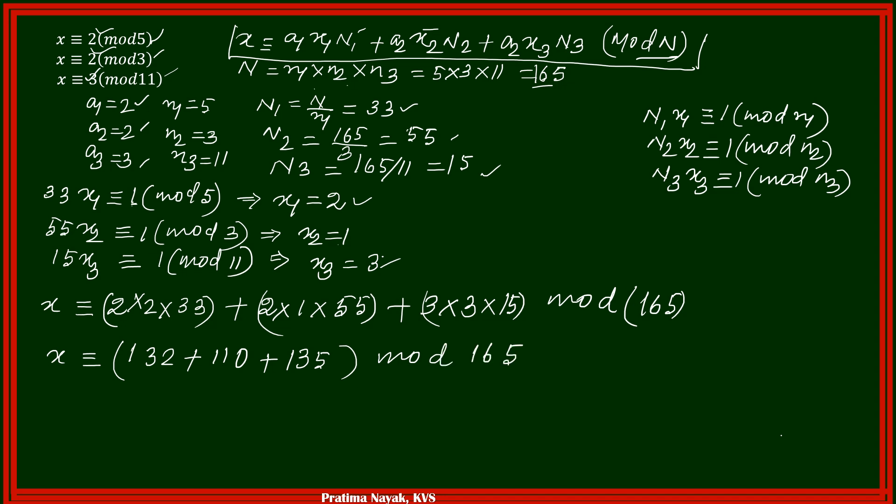So if we take the sum, x is congruent to 377, 165. That means I will divide 377 with 165. 377 with 165. It will multiply with 2. So it is 330. So it will be 47.